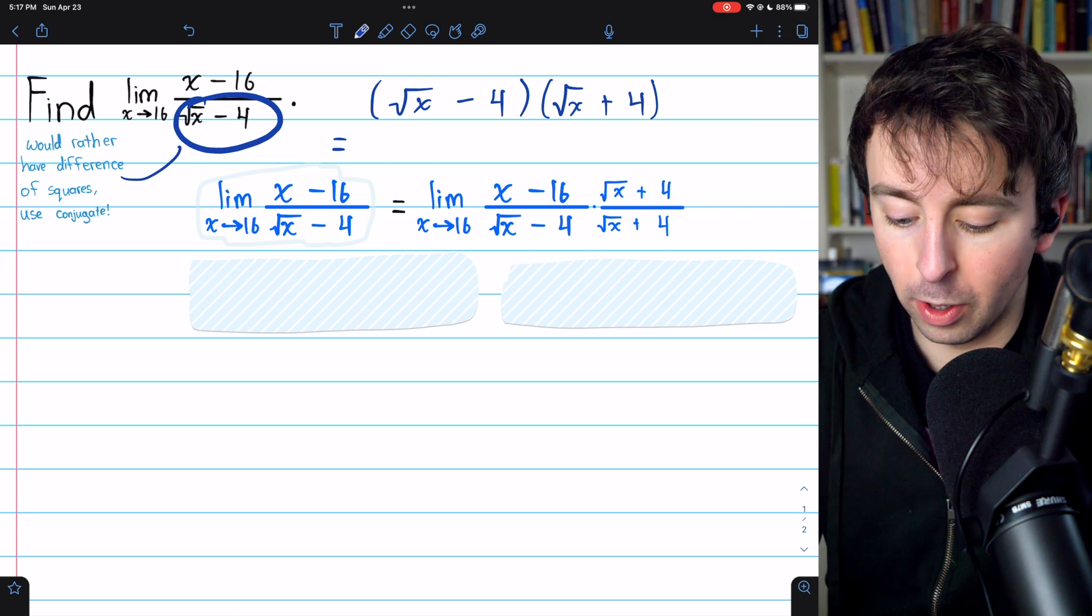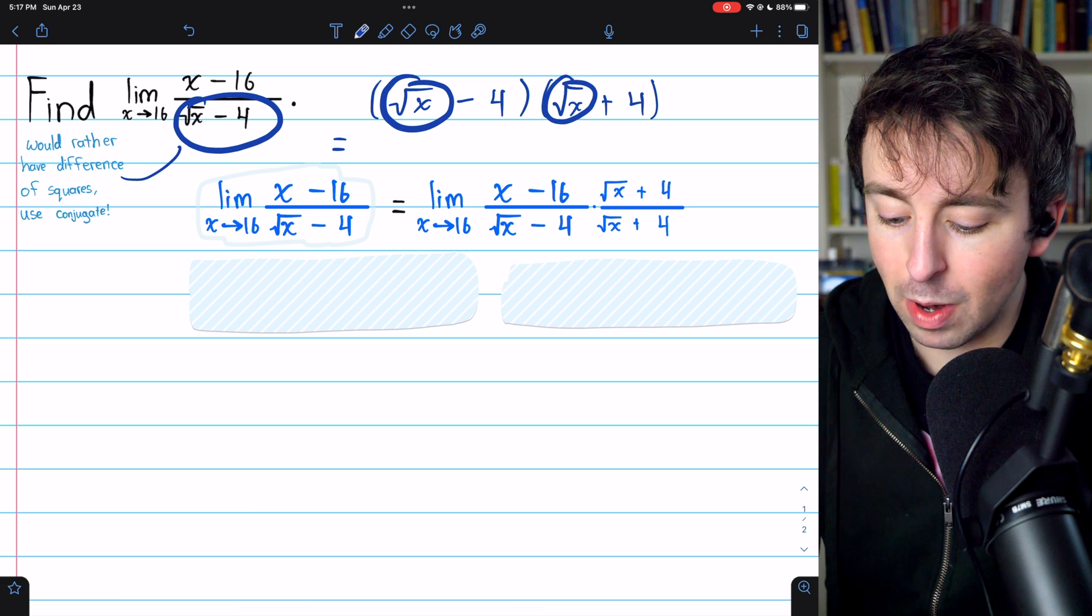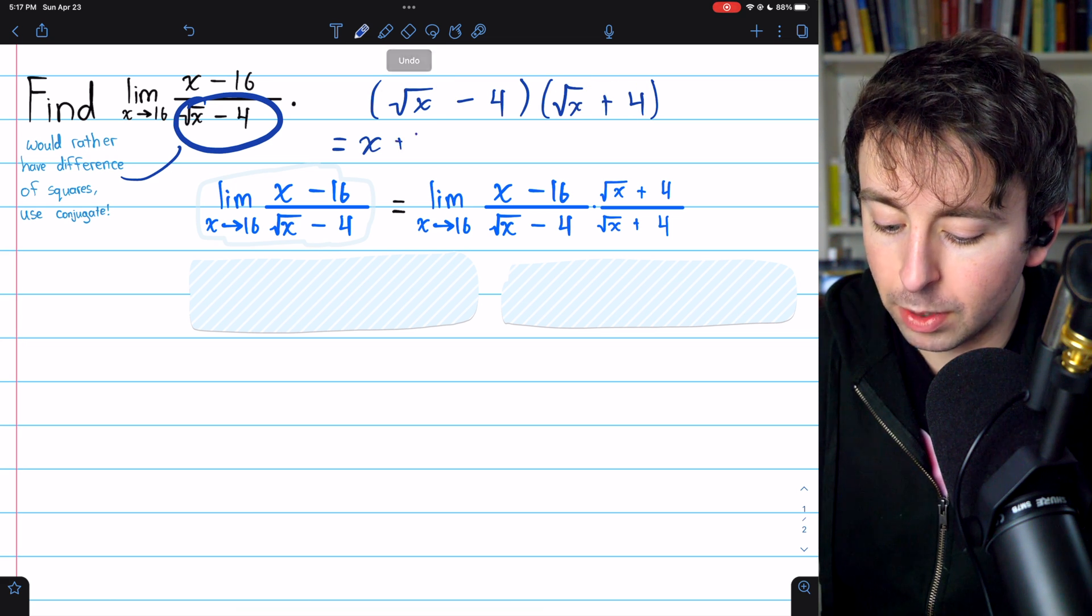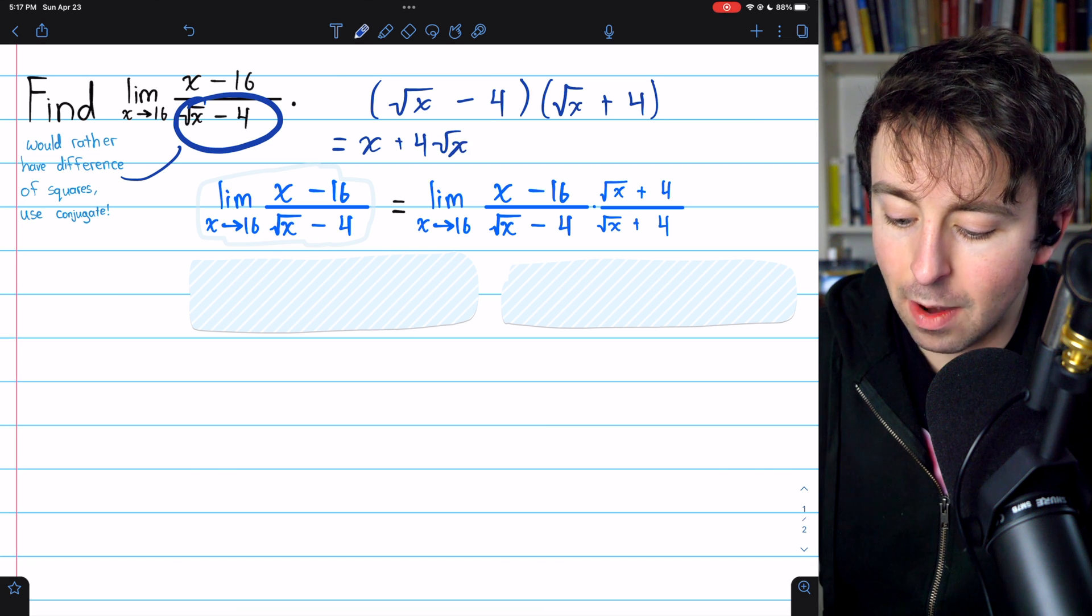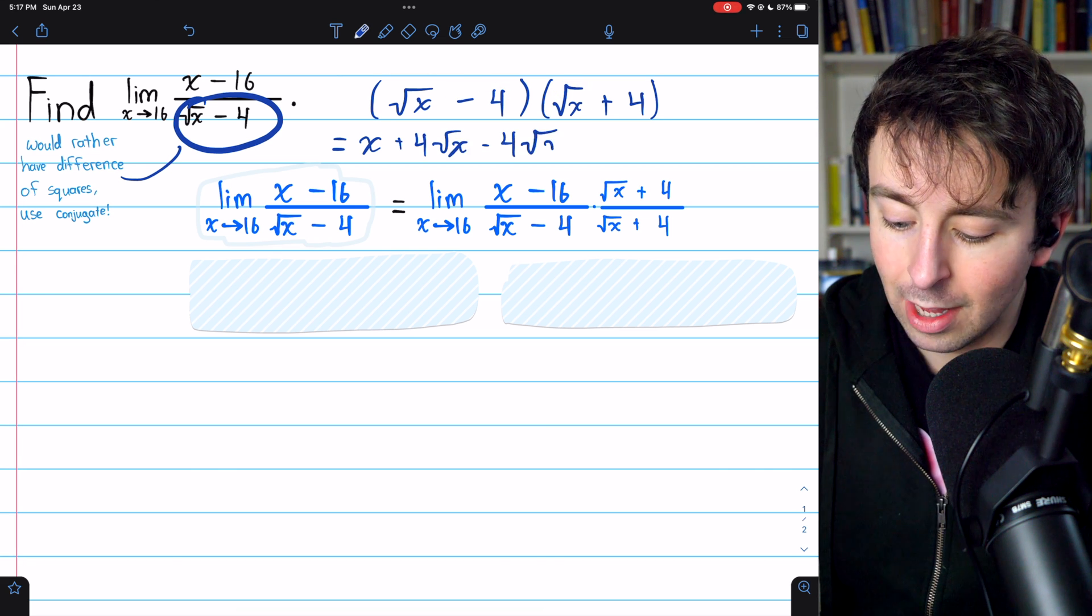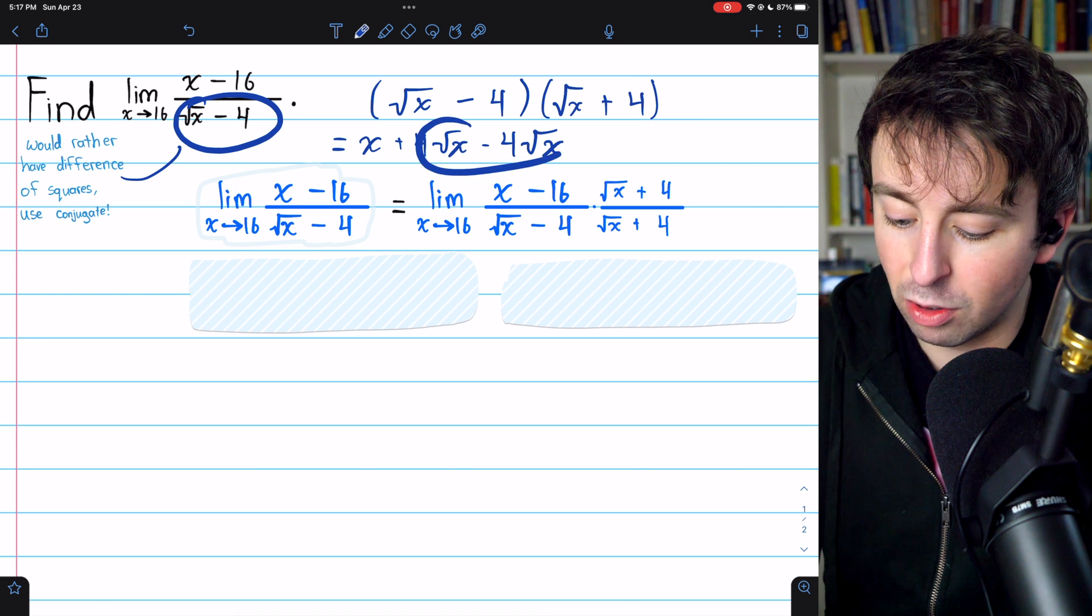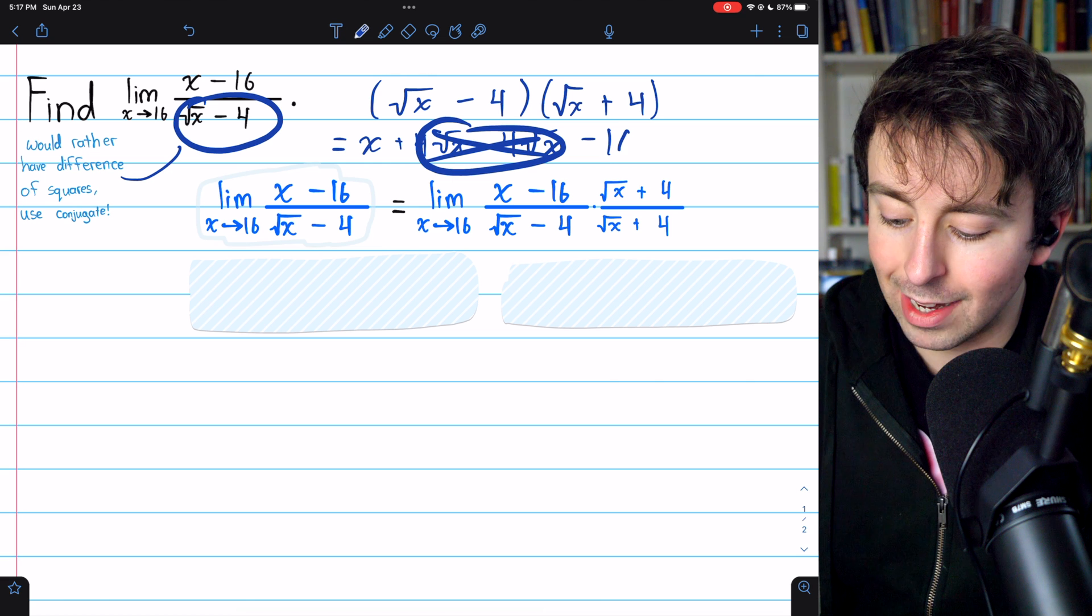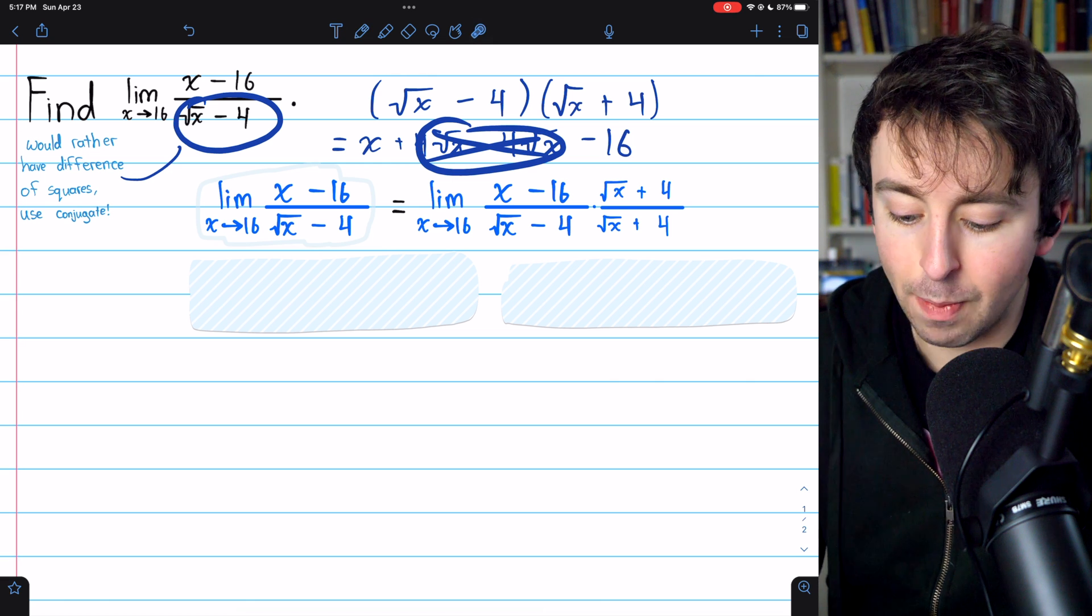But just to show you how it works, you'd have root x times root x, which just gives us x. Then root x times 4, which gives us plus 4 root x. Then minus 4 times root x, which gives us minus 4 root x. You see the beauty of the conjugate. These two middle terms cancel out. And then at the end, we have minus 4 times plus 4, which is minus 16. In the end, as expected, we have x minus 16.